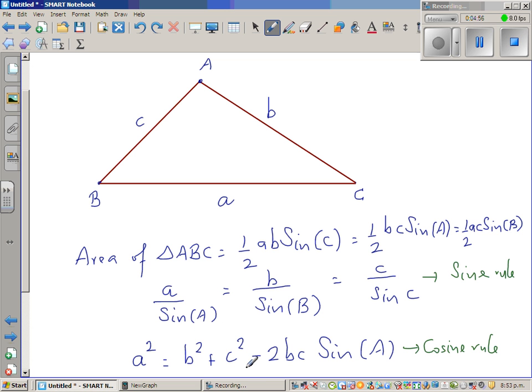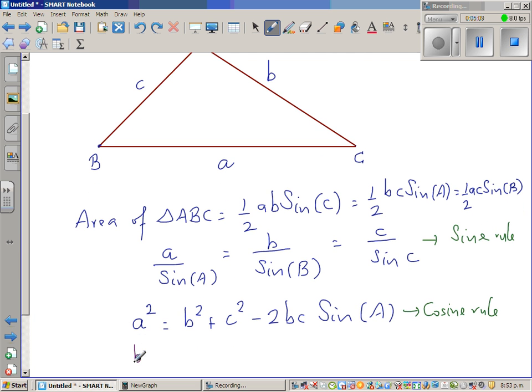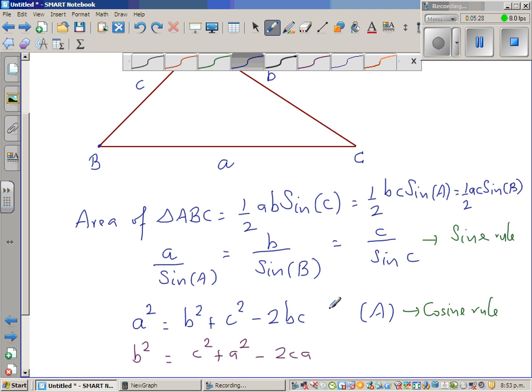Now this is very simple again to remember. If you start with A squared, you have to write B squared plus C squared minus 2BC. If it is B squared, it will be C squared plus A squared minus 2CA times cosine B. This should be cosine because it's a cosine rule. So it should be cos A.